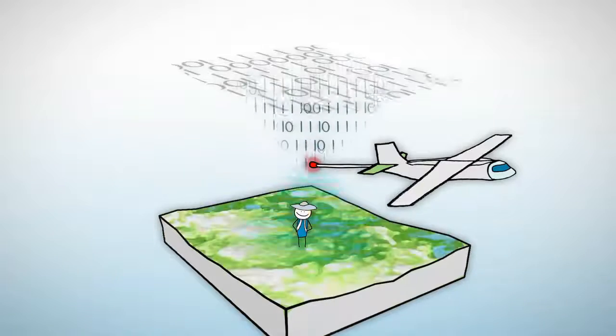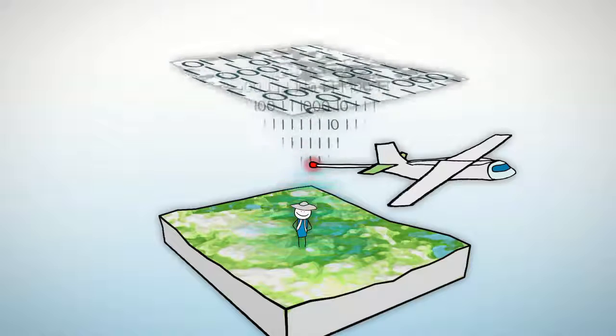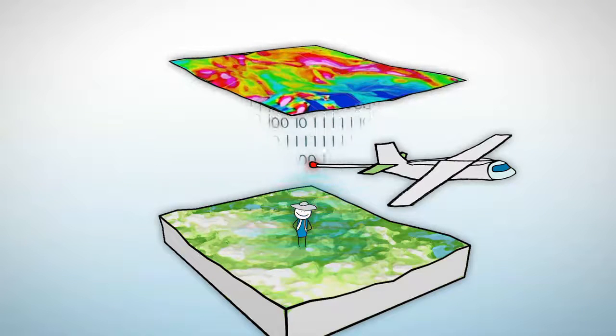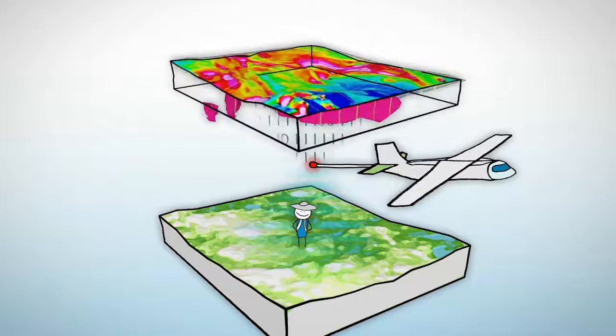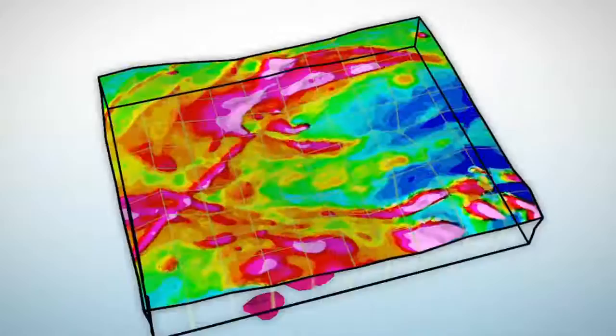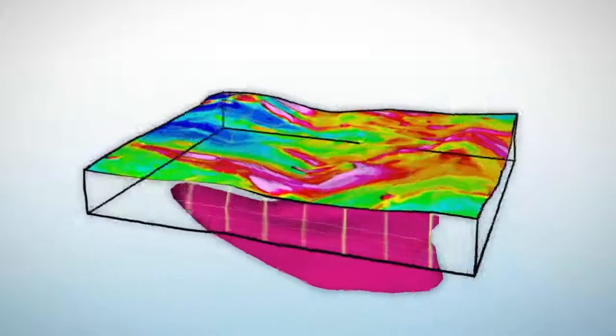3D inversion of geophysical data has become increasingly important in exploration because it gives explorers the ability to transform 2D magnetic and gravity data into detailed subsurface 3D models so they can really start to understand the structure and processes of what's beneath the surface.